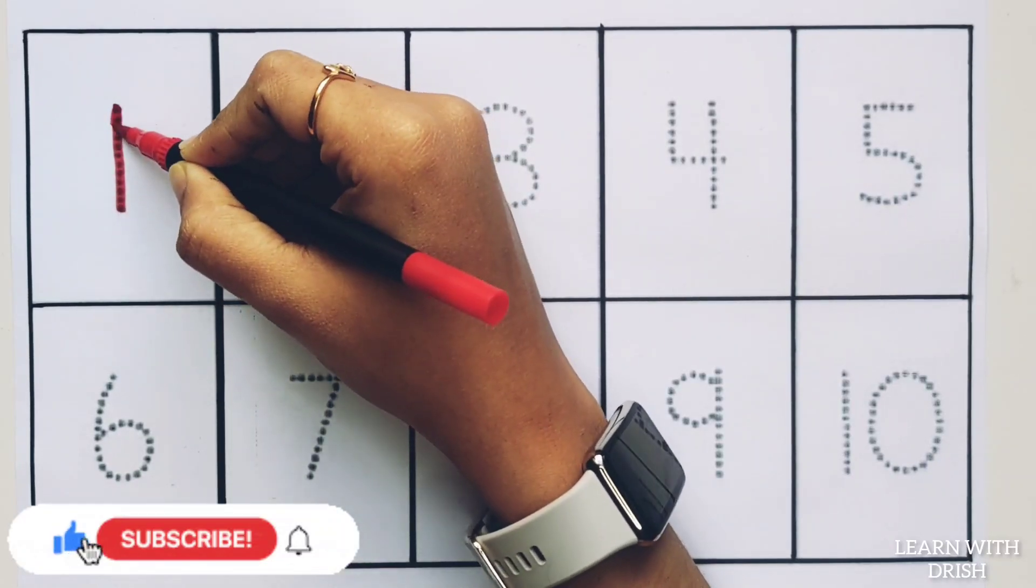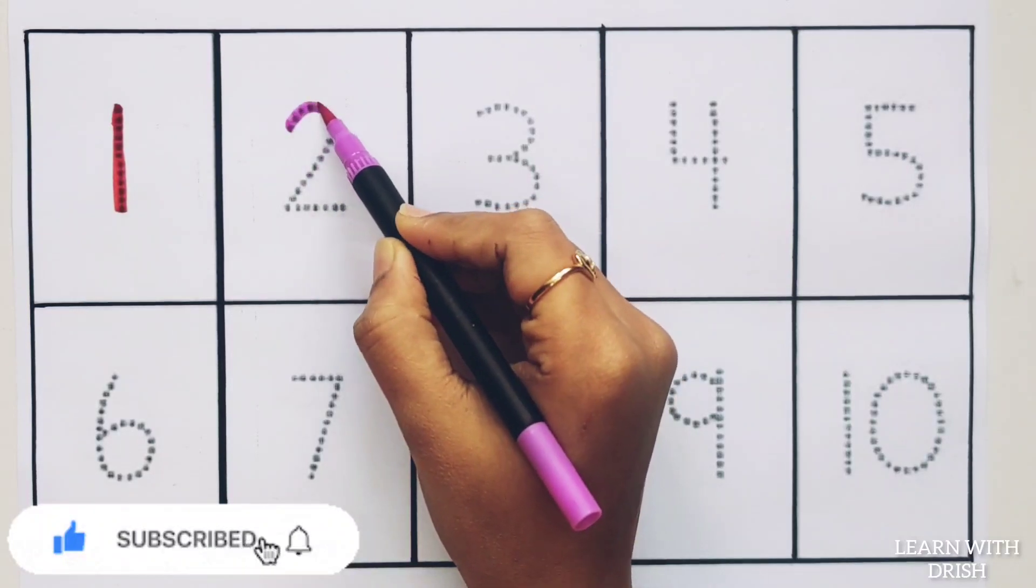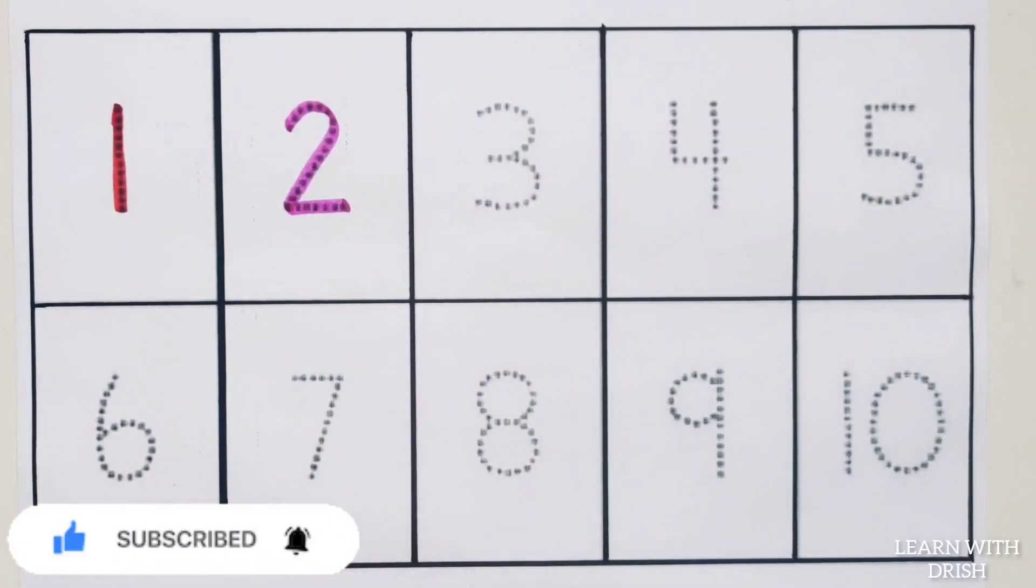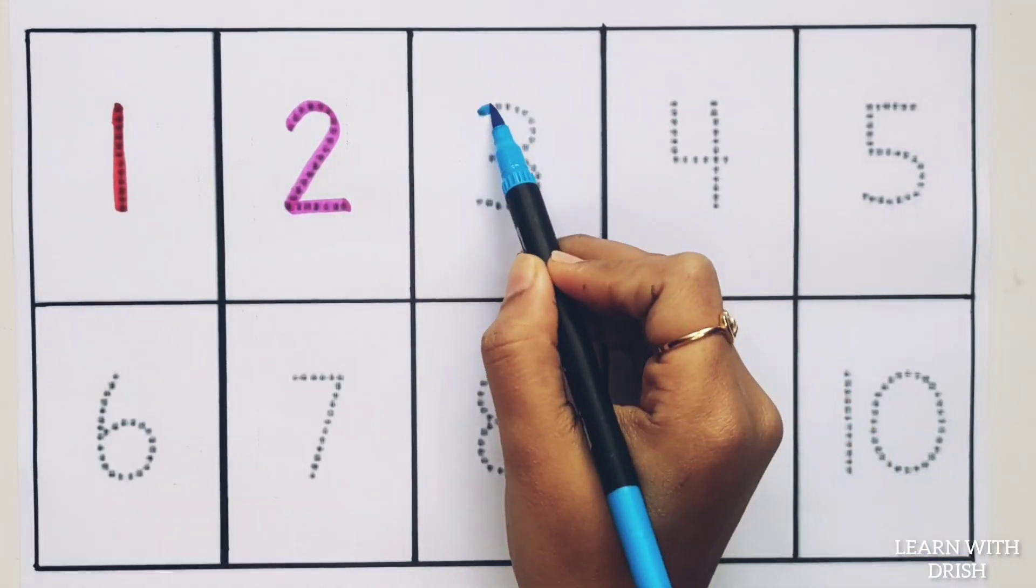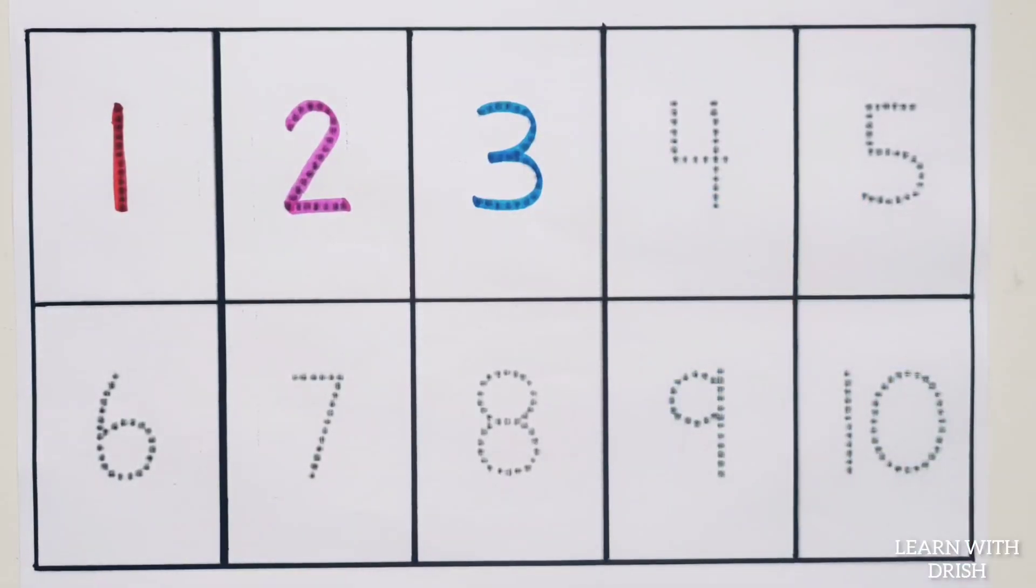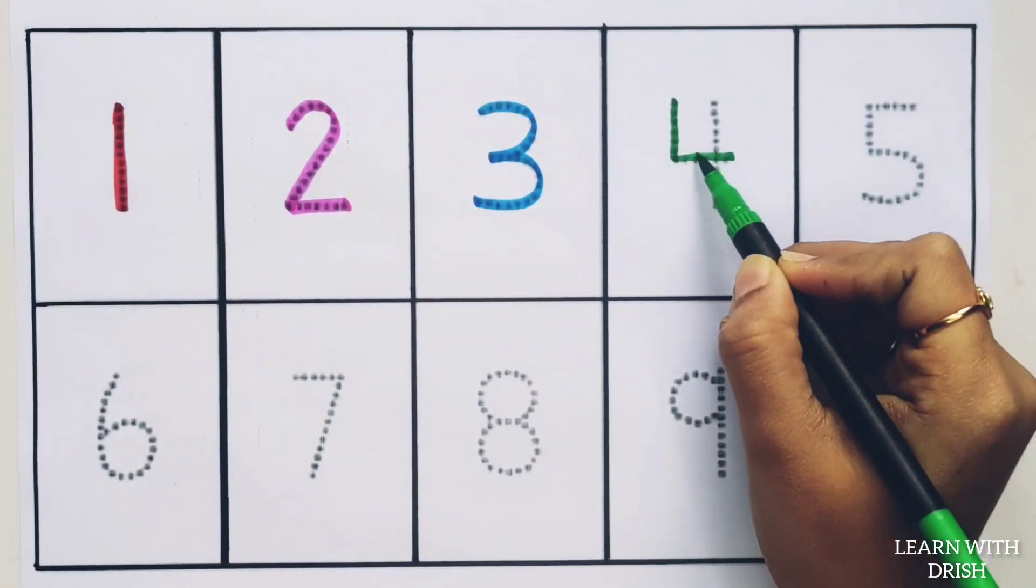O-N-E, one. Two, T-W-O, two. Three, T-H-R-E-E, three. Four, F-O-U-R, four.